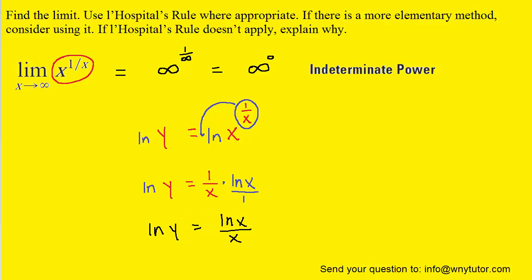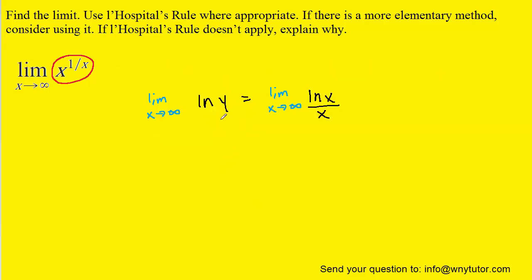After simplifying in this manner, we're going to take the limit as x approaches infinity of both sides of this equation, writing that limit on both the left-hand side and the right-hand side. On the right-hand side, we can see that x is approaching infinity, and if we plug infinity in for x, we would have ln(∞) over ∞ — and since ln(∞) is infinity, we have the indeterminate form infinity over infinity.